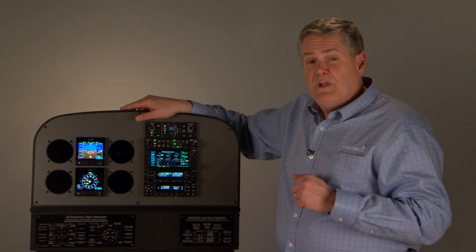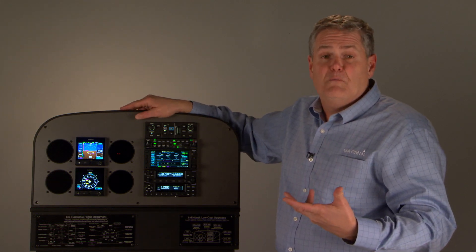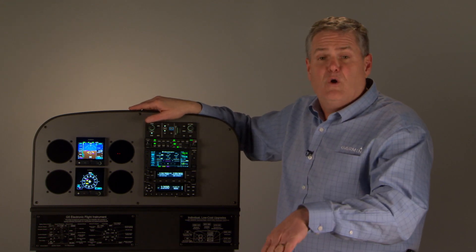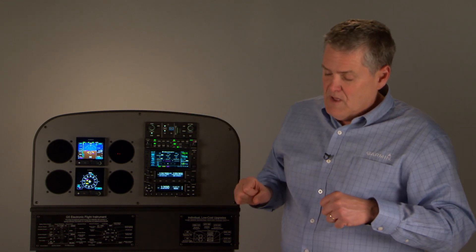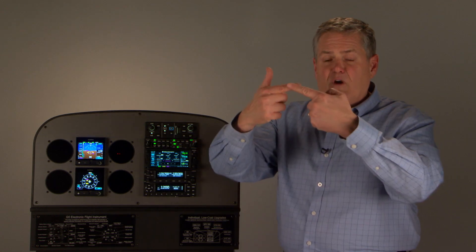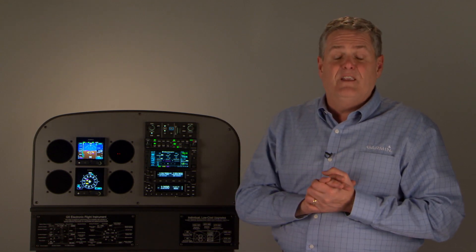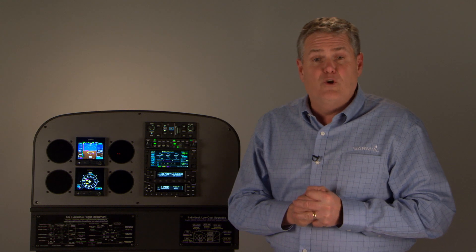Then one more feature we have is what's called go around mode. Once you get to the point, if you're flying in approach, you need to go around. The first thing you want to do is hit go around. It's going to start pitching the airplane up. You're going to add power, gear, flaps, whatever it is on your airplane and start the climb out. And it's going to initialize the go around.